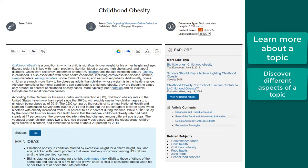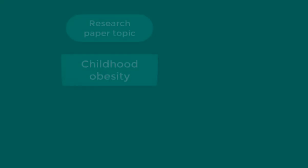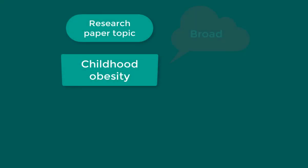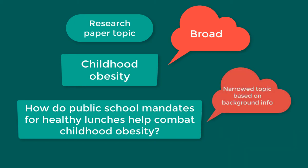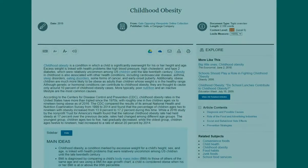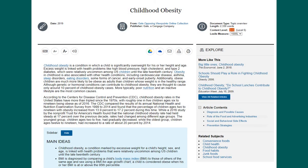Writing a paper often requires you to narrow down a broad topic and discuss specific aspects of the topic. For example, childhood obesity by itself is too broad of a paper topic. Instead, our research question might evolve into something such as, how do public school mandates for healthy lunches help combat childhood obesity. You may use the content in these summary essays to get background information on a topic in order for you to begin research.